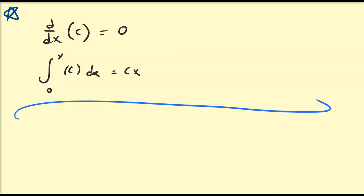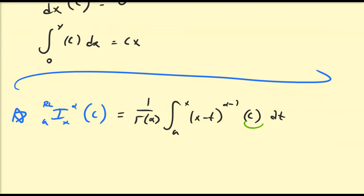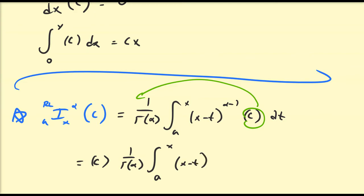We're going to start with the Riemann-Liouville integral of a constant first, and we're going to try and keep the base points as general as possible, because keeping them general is definitely a lot more powerful than choosing a particular base point. So the first thing we're going to look at is the Riemann-Liouville integral with base point a of x, of order alpha, of some constant c. Using the definition, this is just going to be equal to 1 divided by Γ(α) times the integral from a to x of (x − t)^(α−1) times our function evaluated at t dt. We can factor out the constant c.